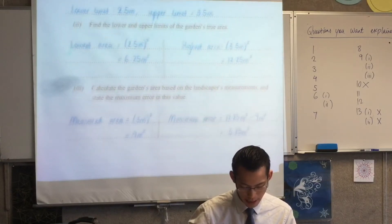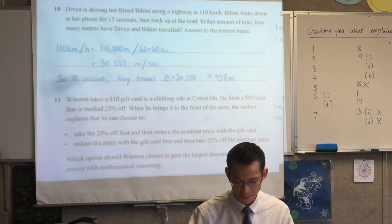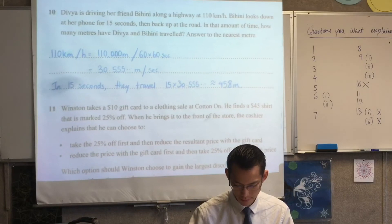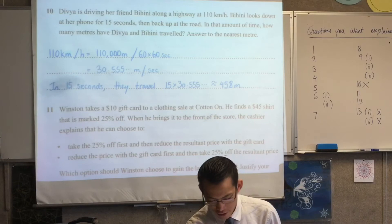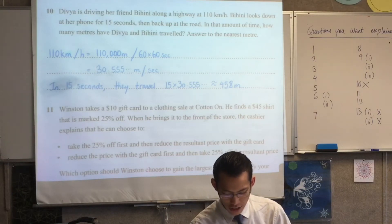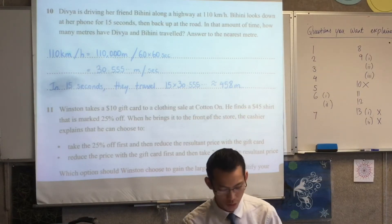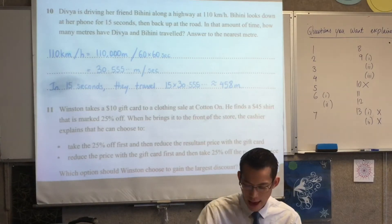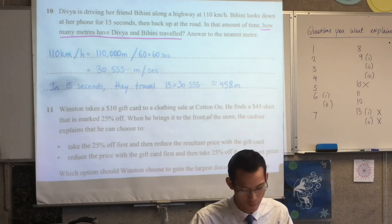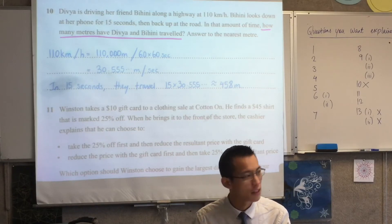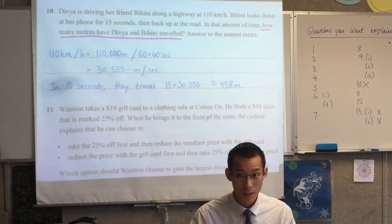All right. I'm going to move on to the next page. So if you want to have a look at your solution for number 10. Divya and Bahini are on that 110 kilometer per hour highway. She looks at her phone and then she looks up. So the question itself is how many meters have they traveled in that time, right? So the first thing you notice is that the question is about meters, but the rate you've been given is not in meters. Do you notice that? Where is the rate? It's the first line, right? 110 kilometers per hour.